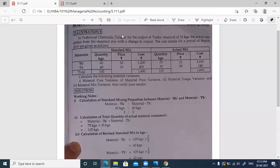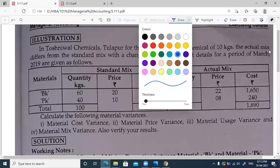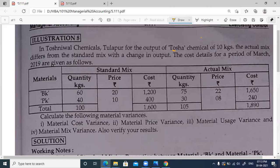On page number 5.111, we have a problem on material mix variance. In Toshniwal Chemicals in Tulapur, there is a company manufacturing a chemical called Tosha with output of 10 kgs. The actual mix differs from the standard mix with a change in output. The cost details are given for the month of March 2019, and you are required to calculate the material cost variance, material price variance, material usage variance, and material mix variance. Also verify your results.